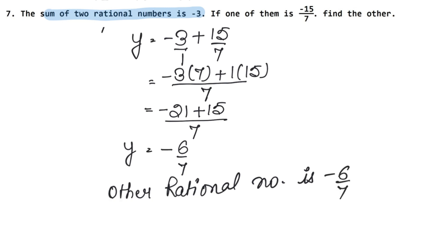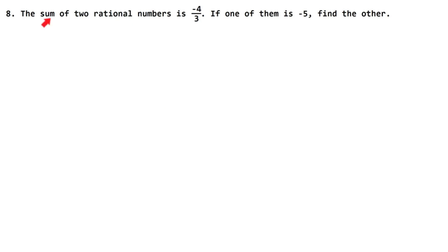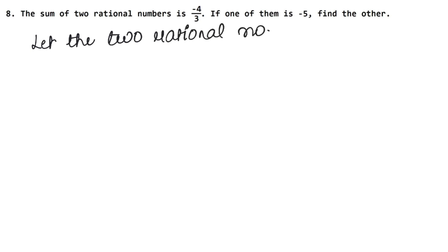Let's do the next question. The sum of two rational numbers is minus 4 upon 3. Let the two rational numbers be A and B. If one of them is minus 5, let's assume A equals minus 5. We have to find B's value.